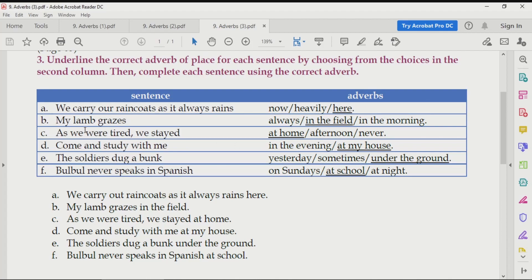Next one, As we were tired, we stayed. At home. This is a place. Afternoon is a time. Never is frequency. So, the correct answer will be at home. It is an adverb of place.